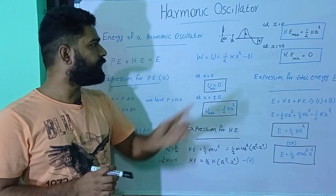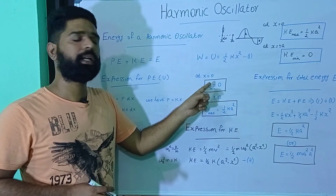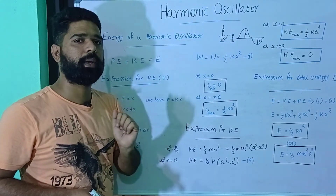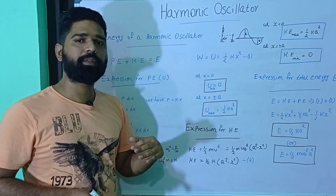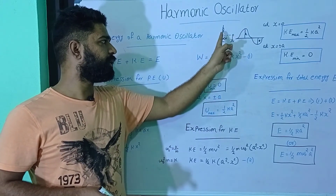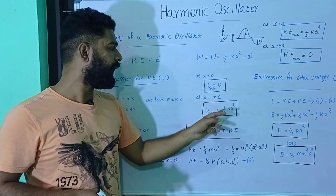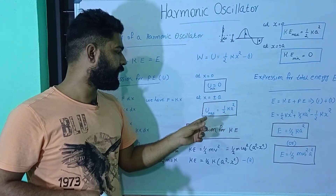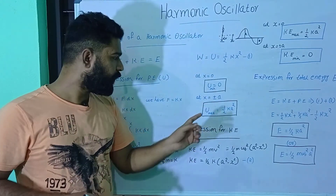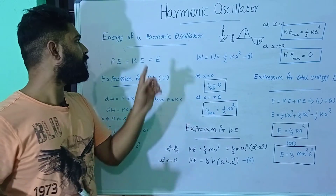At the initial position x equals zero, the potential energy is zero — that is the minimum. At maximum displacement x equal to plus or minus a, the potential energy is maximum. So U_max is equal to 1/2 kA². This is the expression for the potential energy.